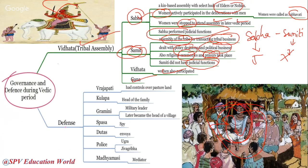Vidatha — women also participated in it. Gana is also a form of tribal assembly. Regarding officials: Vrajapati had control over pasture lands. Kulapa was head of the family. Gramina was the military leader during early Vedic period but slowly became the village head. Spasa was a spy who collected information secretly. Dutas were envoys. Madhyamasi was a mediator.